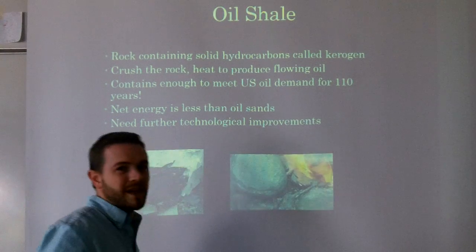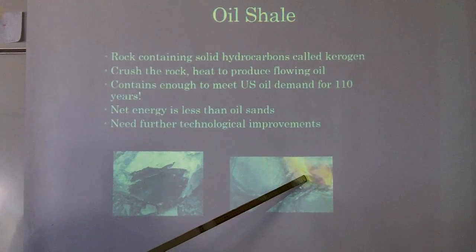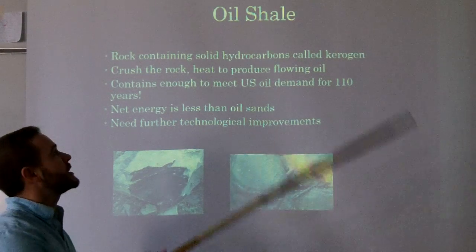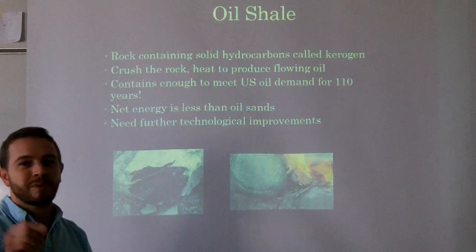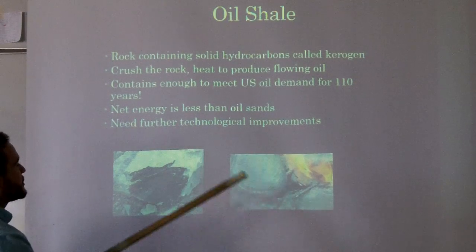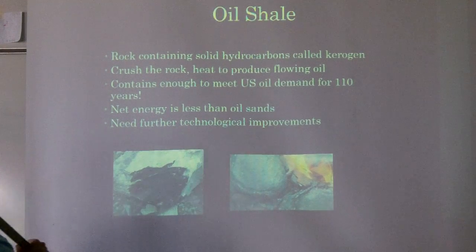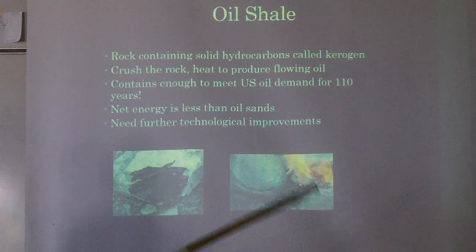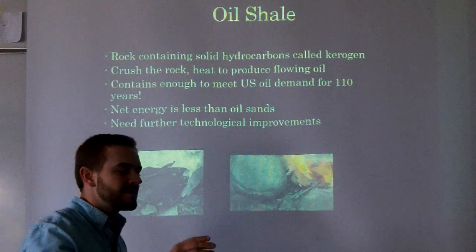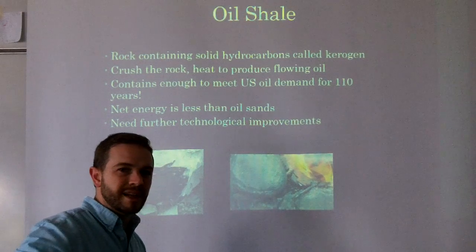Oil shale is another unconventional source. The shale rock is dark inside because it's filled with an oil substance called kerogen — that's the specific product we're after in oil shale, versus bitumen in tar sands. You crush the rock, heat it up, and the kerogen flows out of the pore spaces. The U.S. contains enough oil shale to meet domestic oil demand for 110 years. However, the net energy is even less than oil sands, and much more technological improvement is needed to make it viable — they know it's there but are waiting on better technology before extracting it.